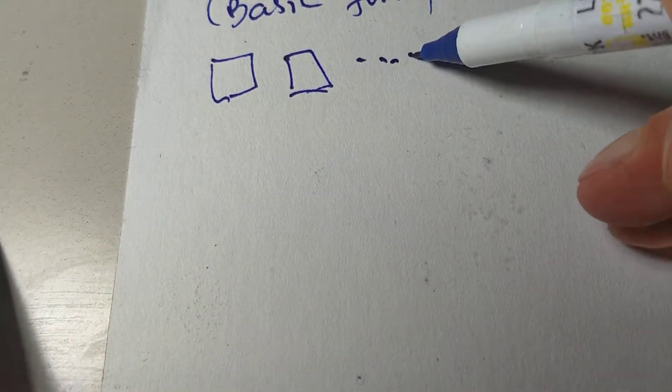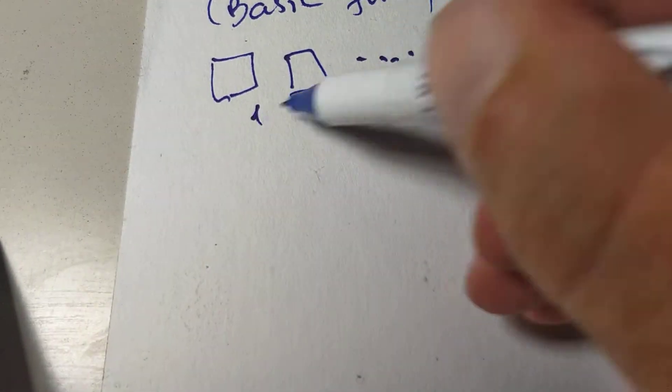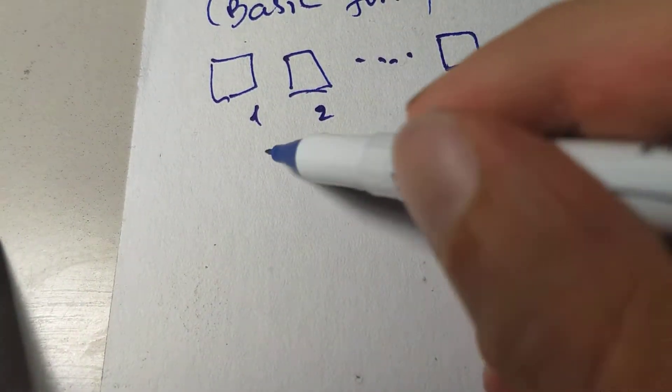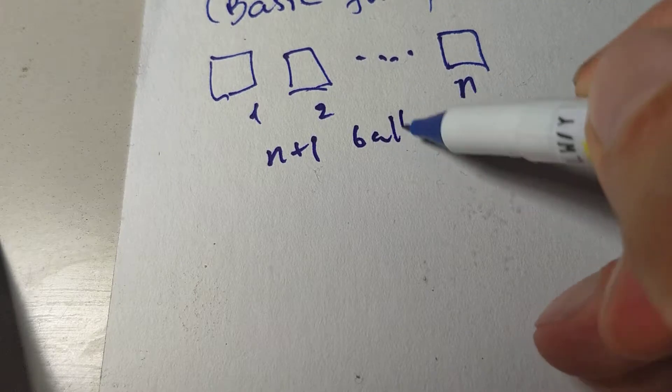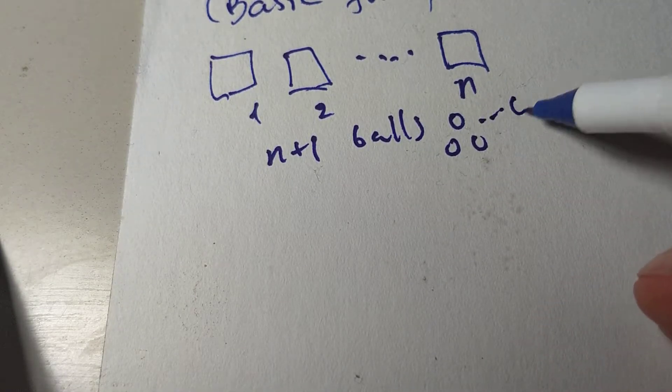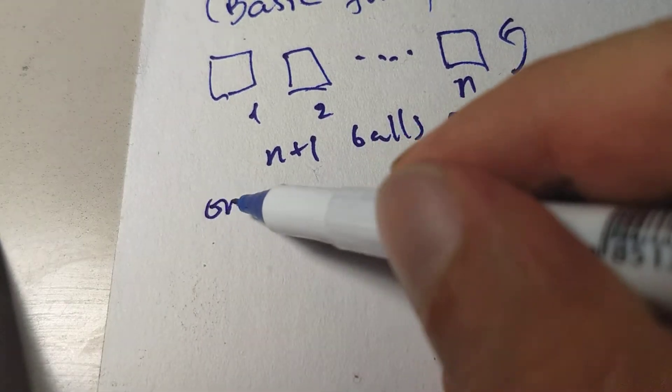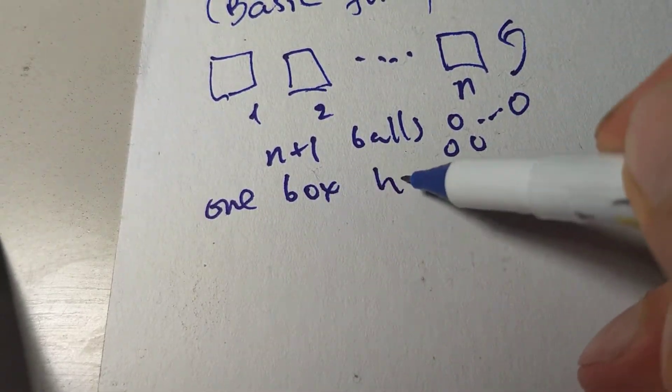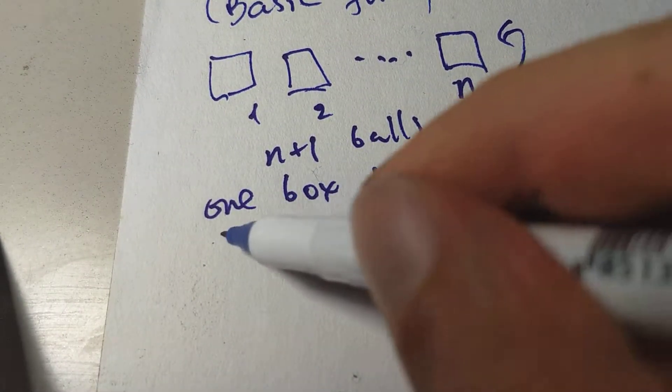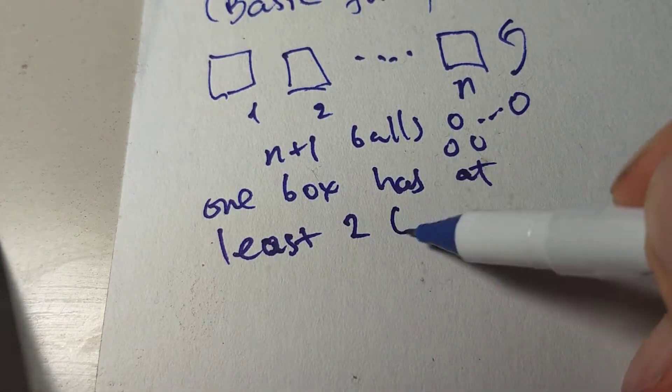We still have a lot to do. You remember how it goes. We have n boxes all the way up to n, and n plus one balls. If we try putting these balls into these boxes, then one box has at least two balls.